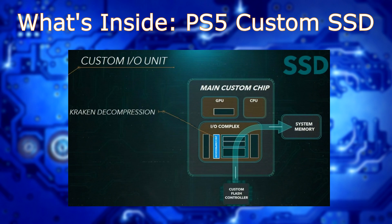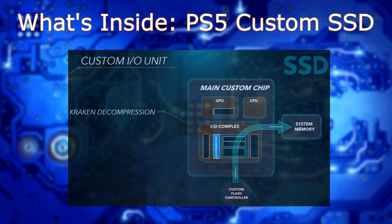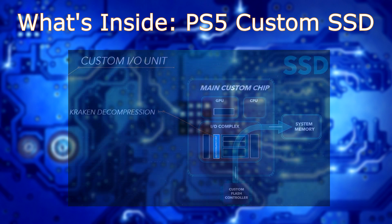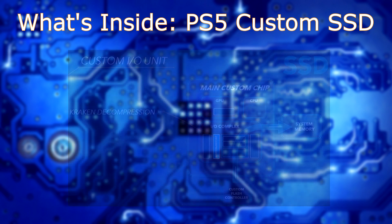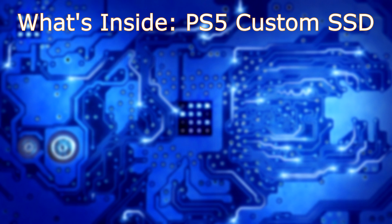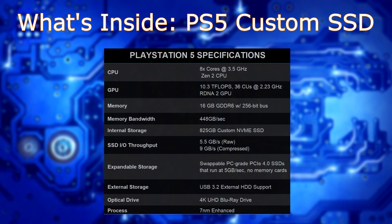Here's how complicated the algorithm is: without a dedicated IC to do this compression, it would take nine Zen 2 CPU cores to decompress that type of data. With the Kraken Decompressor, you can get closer to 10 gigabytes per second rather than five and a half. That's pretty amazing.